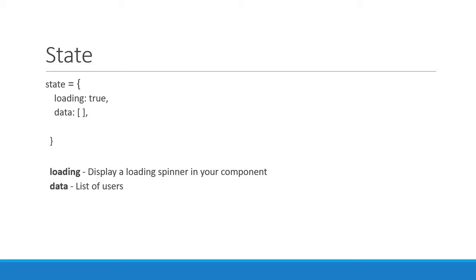The final property is an error message. Our API request might fail for some reason, and in that scenario instead of getting back the data we get back an error which we store in the error property. This message can be used to display the error to the user if your application has a user interface. So that is our state object.